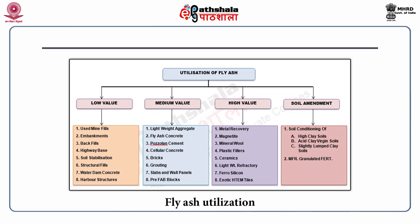Fly ash utilization methods can be divided into four categories based on value. Low value utilization includes use as mine fills, in embankments, backfills, highway base, soil stabilization, structural fills, water dam concretes, and harbor structures. Medium value uses include making of lightweight aggregates, fly ash concrete, pozzolana cement, cellular concretes, bricks, grouting, slabs, wall panels, and pre-fab blocks.